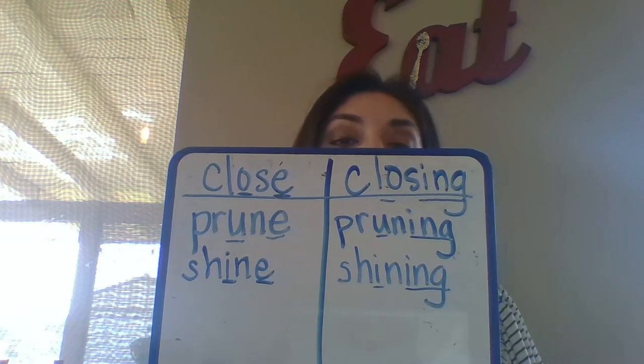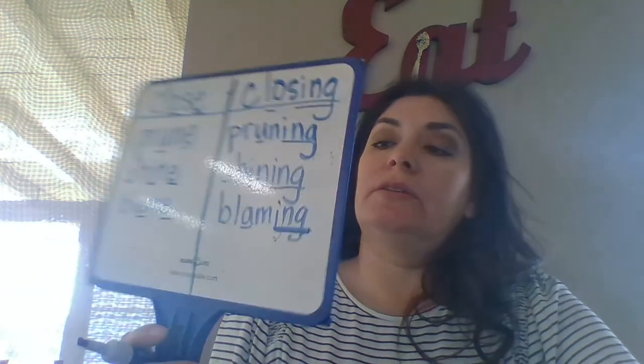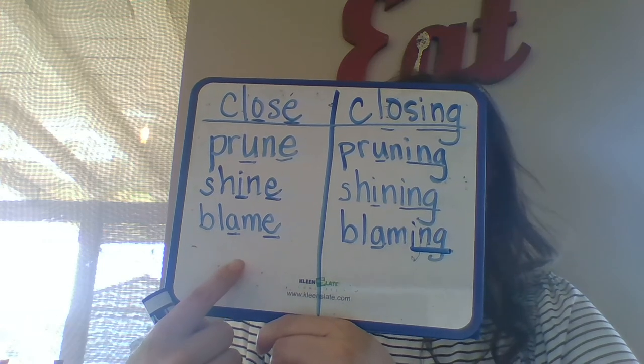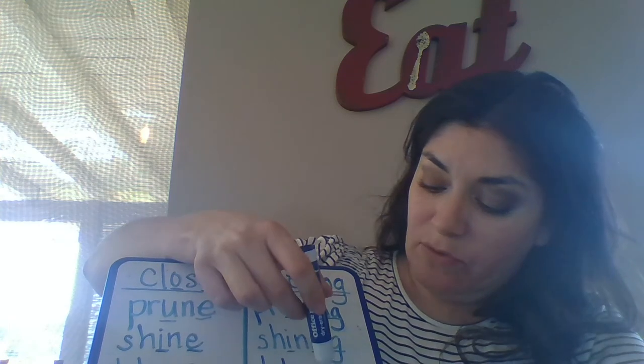Nice job. Now write the next word: 'blame.' Say it with me — blame. Write it on the left side and don't forget to underline the two vowels that show the long vowel sound. This time I'm not going to show my board — I want you to do the right column as well and write the word 'blaming,' underlining the long A and the ending. Here is what I have: 'blame' on the left and 'blaming' on the right. That silent E is gone, replaced with the I to start the -ING ending.